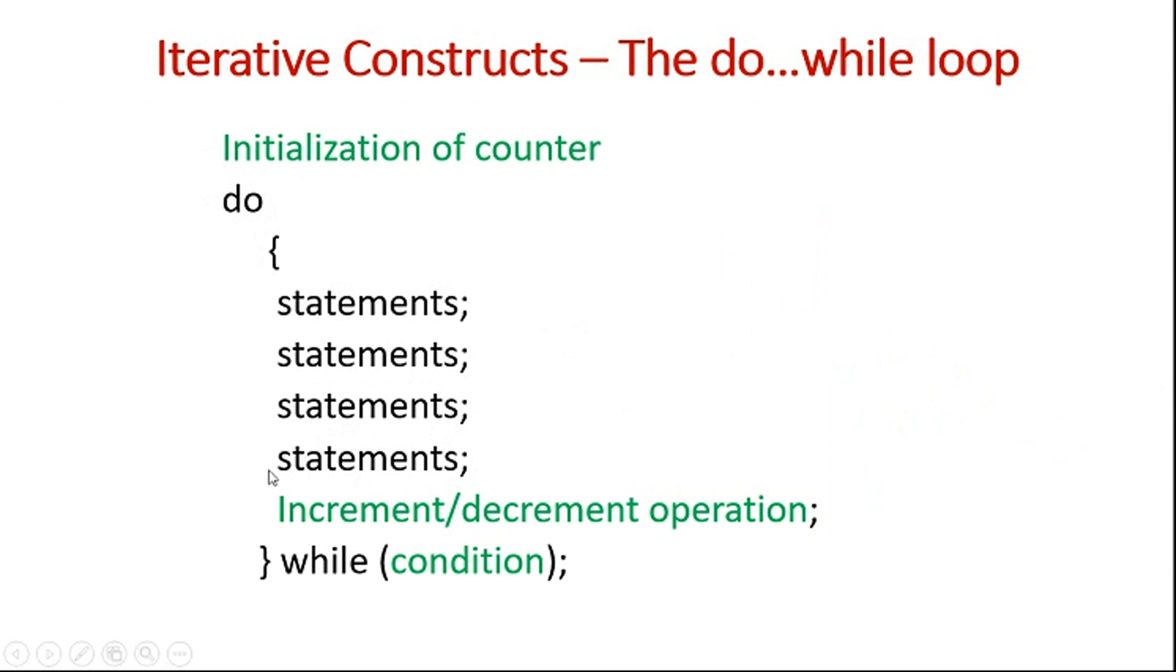Syntax is something similar to that of the while. Only the change is, do is the additional keyword added over here. After the initialization, body of the loop is almost same. While is provided at the last, along with the semicolon. So this is what the condition is, as it is provided in the while loop also.